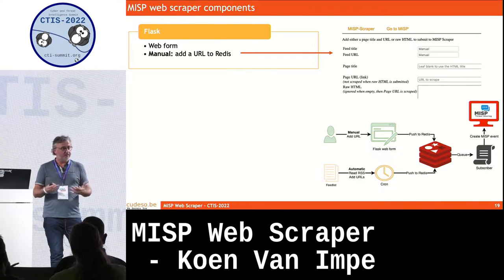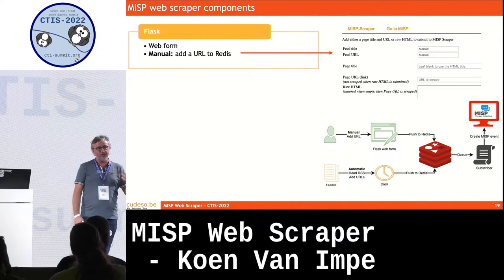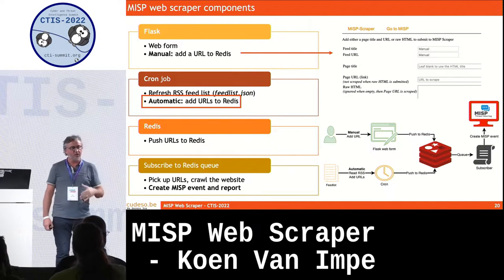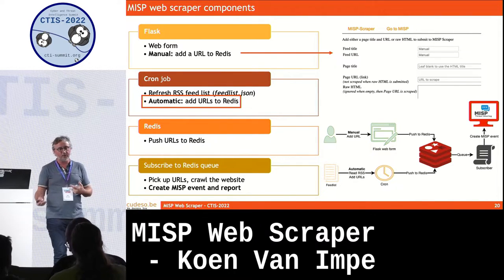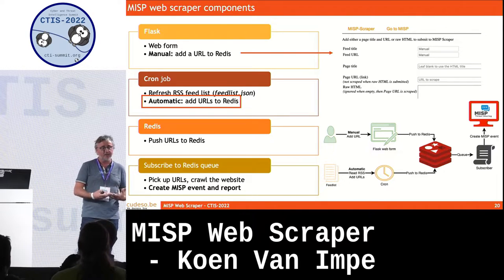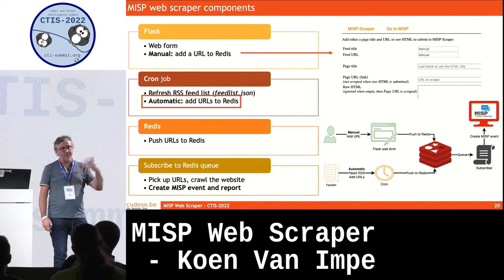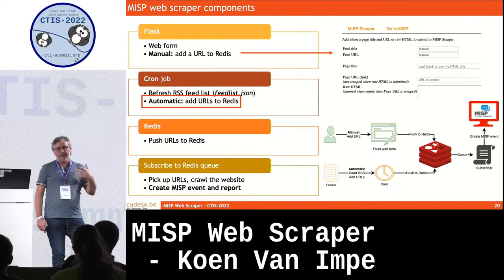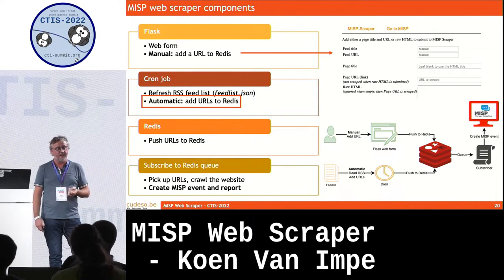I built my tool around these existing MISP report features and added some additional things. There's a Flask web interface that allows you to manually submit one URL. By default, it works through a cron job built into the Python script that fetches RSS feeds and visits all the URLs. All these URLs — manually or through the cron job — are added to a Redis queue. Another component reads every URL pushed onto that Redis queue and crawls them, converting them to MISP events and MISP reports.